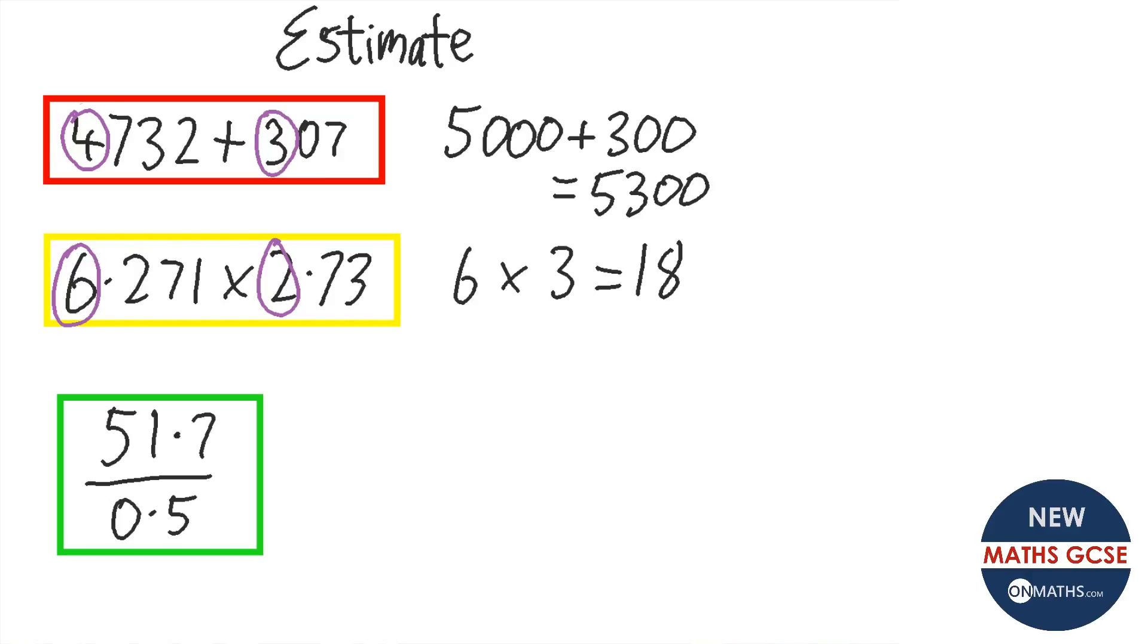And this last one, so the significant digit of the top one is the 5. So it will turn to 50. And the bottom, well, it's just 0.5. So we can leave that because that's already to one significant figure. I can times top and bottom by 2, sorry, by 10. So that would be 500 over 5. And we know that's going to be 100. Because 100 times 5 is 500.